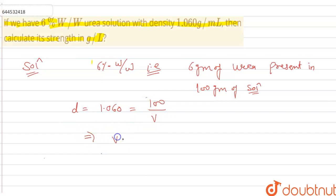So we find V equals 100 divided by 1.060. Now convert to liter, so divided by 1000. We get 1 by 1.060 into 10.